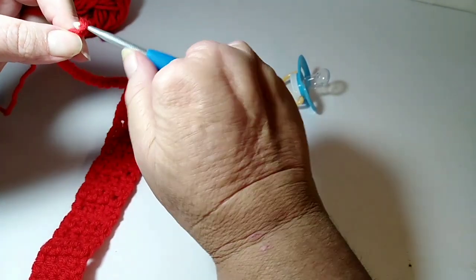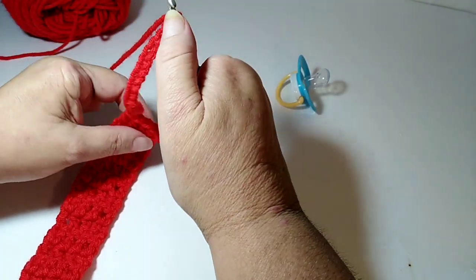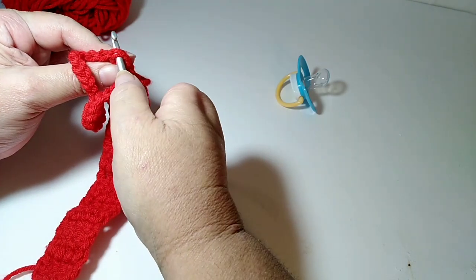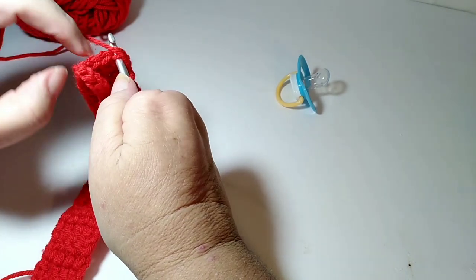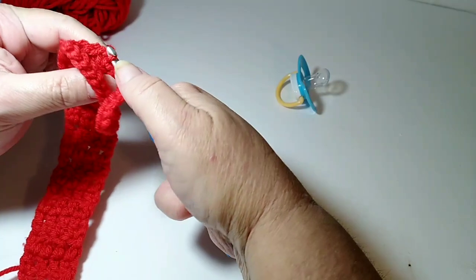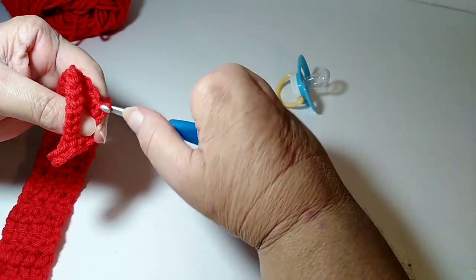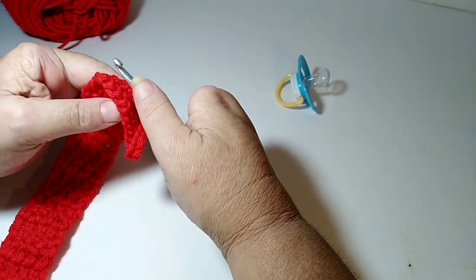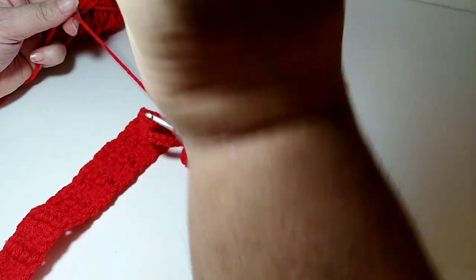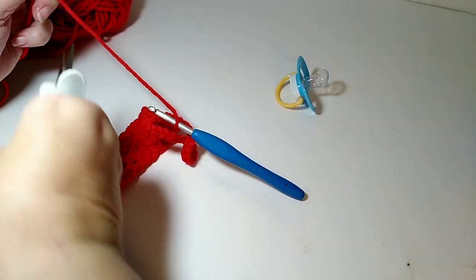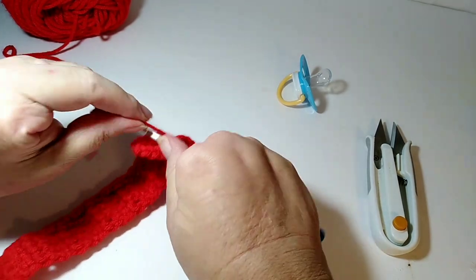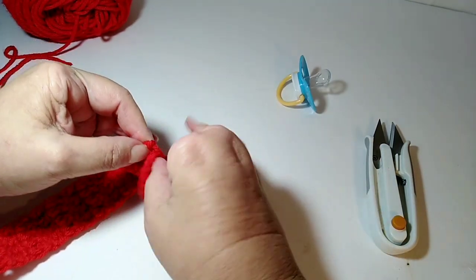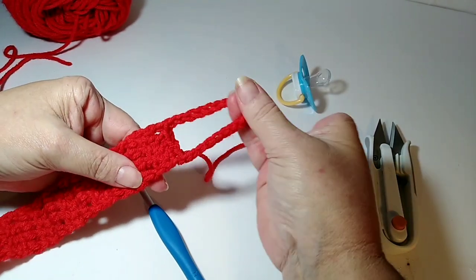Okay, that's 20 that I chained, and then I'm just going to come right back down here and go in this last stitch over here, and I'm going to slip stitch into it. So I'm going to pull my yarn through and then pull it through the loop on my hook, and I'm going to go ahead and clip my yarn. Pull that through and tighten it down.